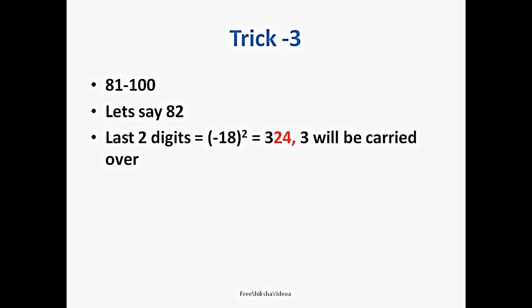Trick 3. Now we have to find out squares between 81 and 100. Let's say 82. So what will the last two digits be? This time we will be subtracting it from 100. 82 minus 100 gives us minus 18. And minus 18 square is 324. 3 will be taken as a carry over.